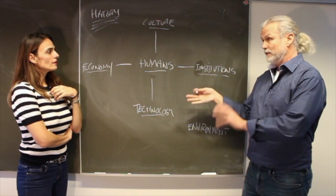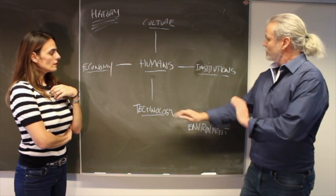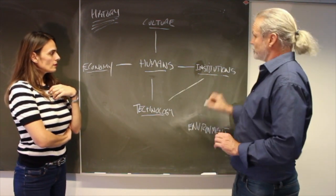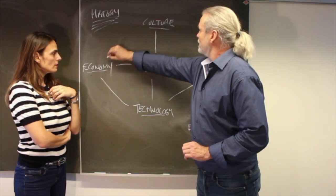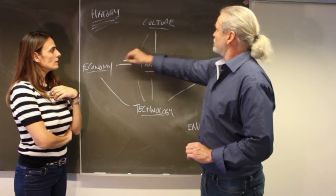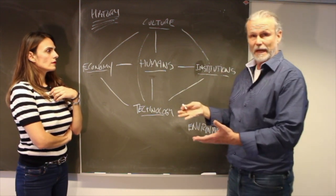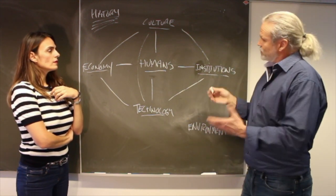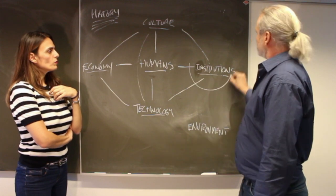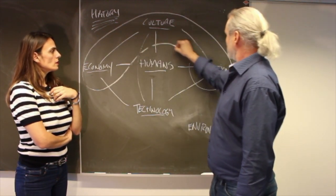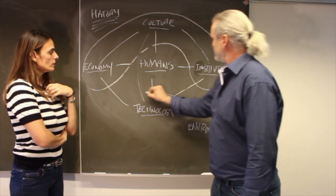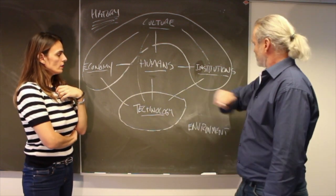And later on, when we discuss how these different things change, our technology influences our institutions, our economy, as well as our culture. But our economy, culture, and institutions also interact. So just to sum up, these are our social technologies and these are our physical technologies.